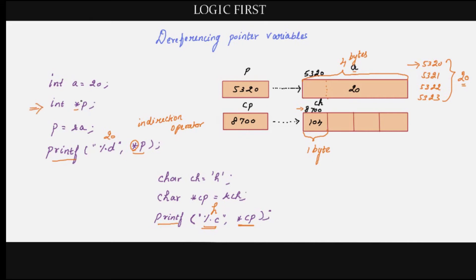The star here is the indirection operator, and it is different from the star present in the declaration statement. In the declaration, star indicates that this is going to be a pointer — that's it. But anywhere else in the program, if you mention star, it is an indirection operator: it will go to the address mentioned and fetch the value from that address.